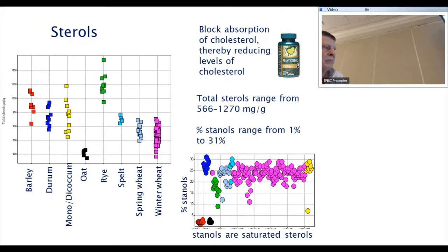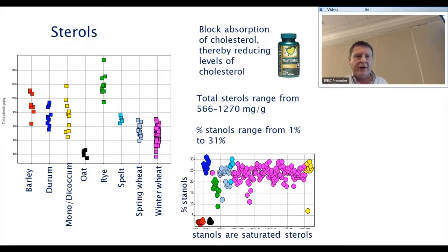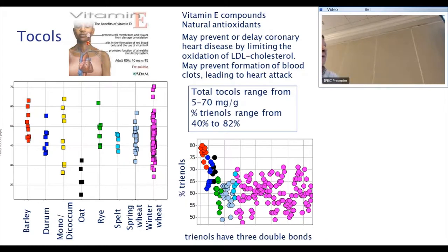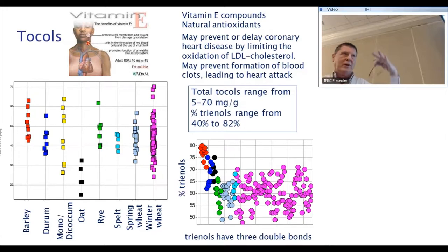The stanols are a saturated form of sterols, and we can again start separating some species based on sterol and stanol content. For tocoles — which include vitamin E compounds — there's a very wide range in wheat. The sterol range was quite tight, but the tocoles range is very wide, with not much separation between species, apart from oats which tend to be low. The tocotrienols, which have three double bonds, show massive variation in proportion with again not great separation between species.